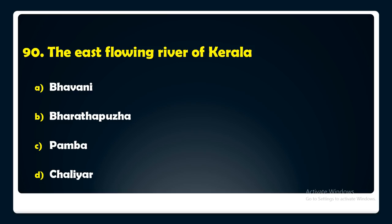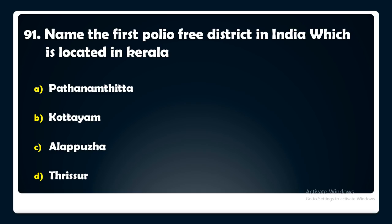Name the first polio-free district in India, which is located in Kerala — Pathanamthitta, Kottayam, Alappuzha, or Thrissur? The answer is: the first polio-free district in India located in Kerala is Pathanamthitta.